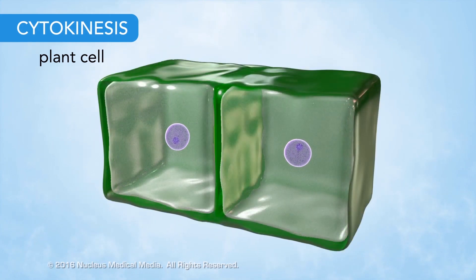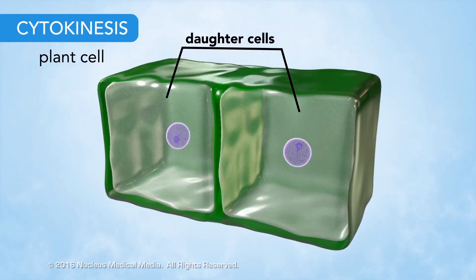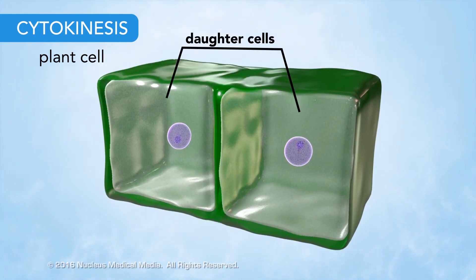Over time, new cell walls form between the two daughter cells. Here are the key points to remember. The M phase is the fourth and final phase of the cell cycle.